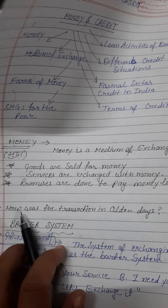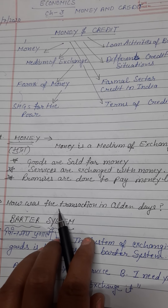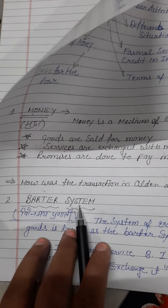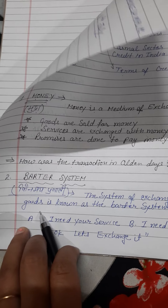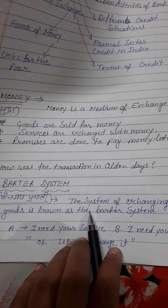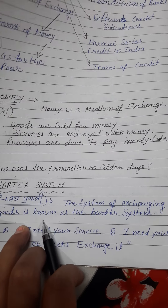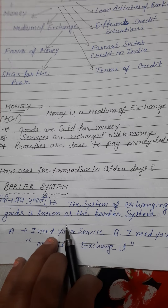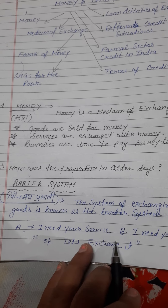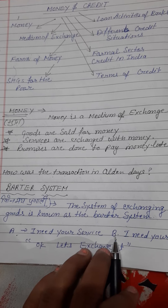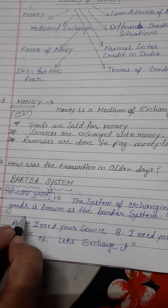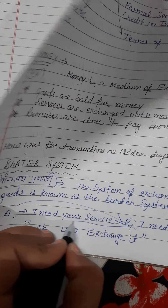The next point is: how were transactions done in the old days? Purane time mein transaction ka kya madhyam tha? Yeh humara topic hai — Barter System, yani vinimay pranali. Barter system kya hota hai? The system of exchanging goods is known as the barter system. Is mein do logo ke beech vastuo ka aadan-pradaan hota hai.